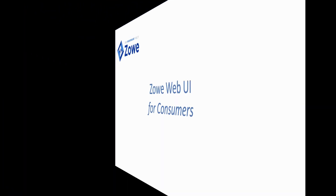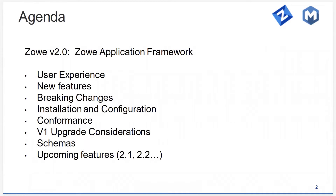Hello, everyone. We have kind of a long agenda today, but the purpose is to cover everything you need to know about V2 as it pertains to the application framework — the set of servers and UIs that allow you to use plugins that show up in the desktop or REST APIs that run through ZSS. Those are the most common end-user reasons to use the app framework, so it really encompasses the app server, ZSS, and the desktop.